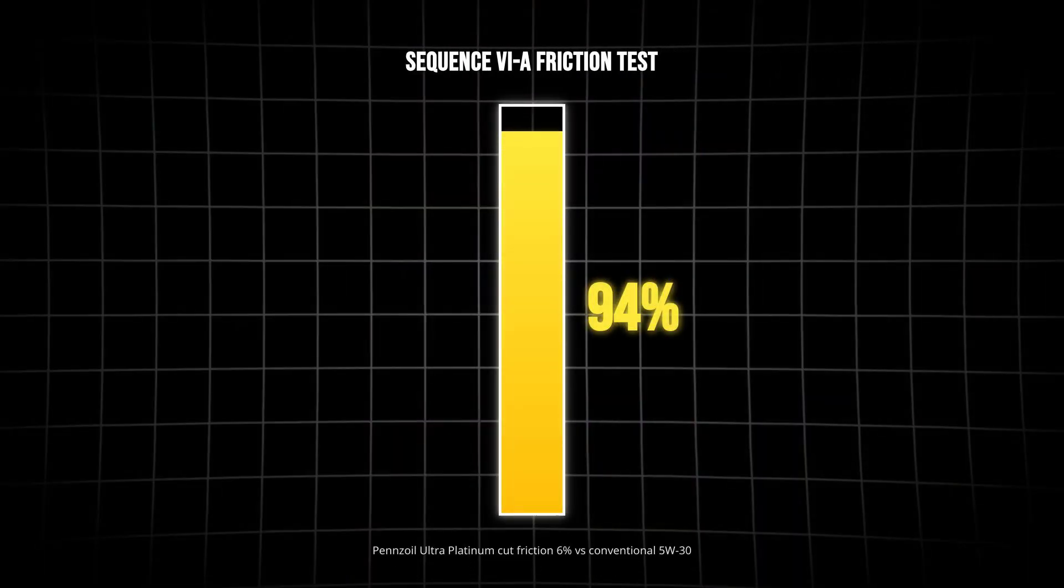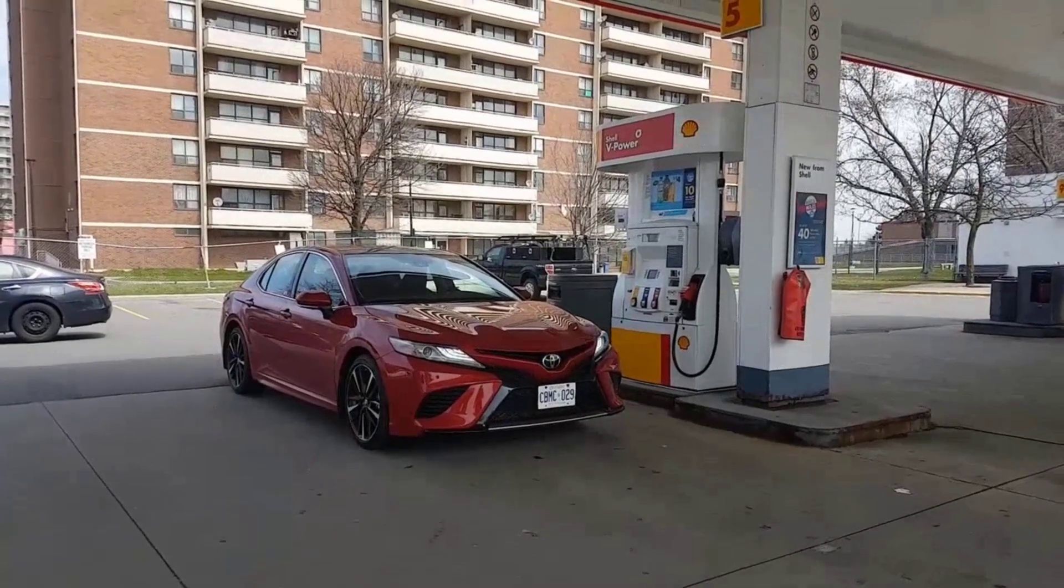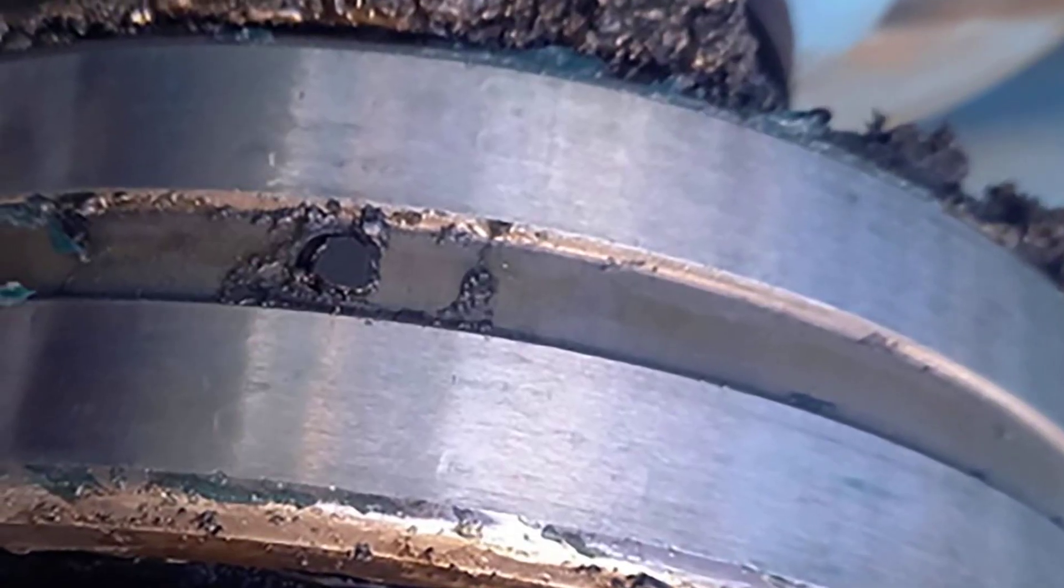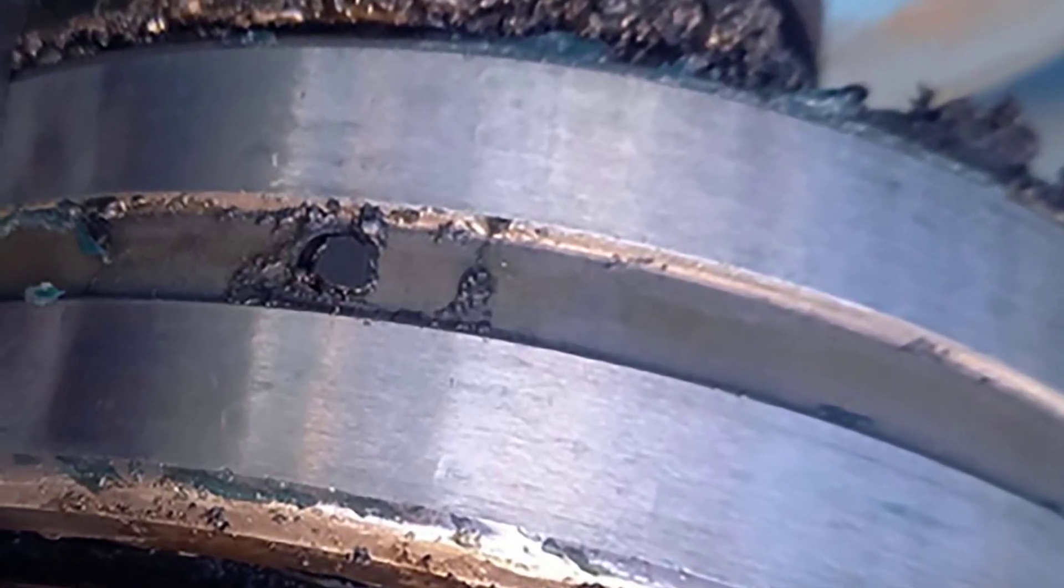In controlled Sequence 6A lab tests, Pennzoil Ultra Platinum delivered up to 6 percent less friction compared to conventional oils. That translates directly to fuel savings at the pump without thinning the oil or risking metal on metal contact.